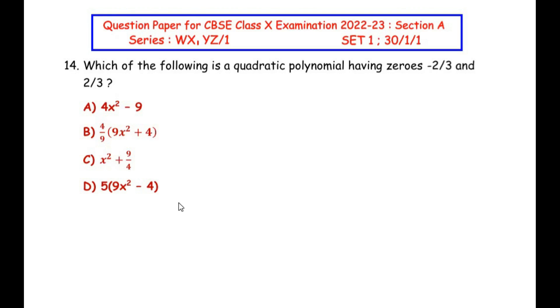Now the 14th question is from the polynomials chapter. Which of the following is a quadratic polynomial having zeros -2/3 and 2/3? So you can see there are four options given. Now let us begin by writing the general formula for the quadratic polynomial first. So the equation of quadratic polynomial is given as x² - (Sum of Zeroes)x + Product of Zeroes.